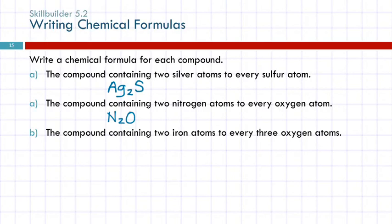How about two irons to three oxygens? Iron is Fe. And two of those, Fe. And oxygen is a capital O. Three.